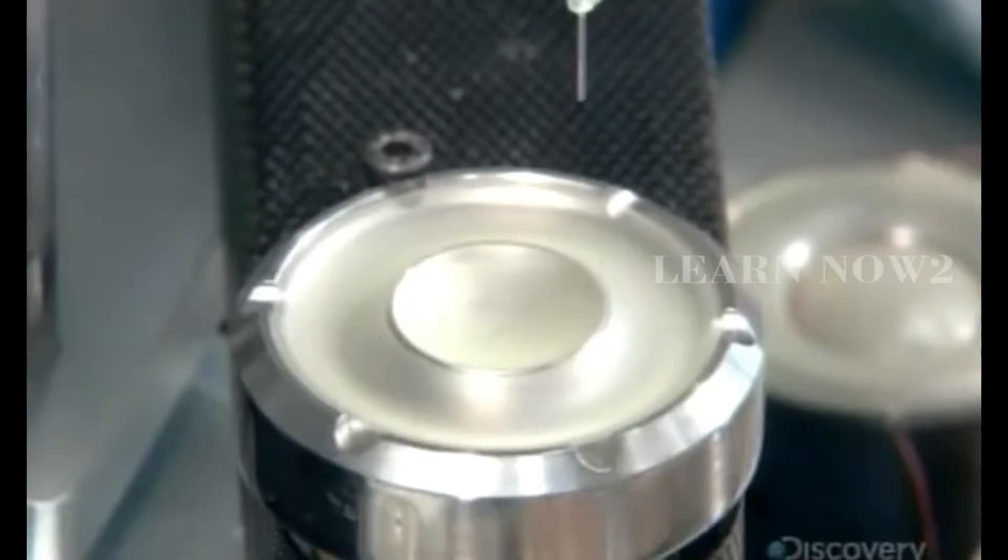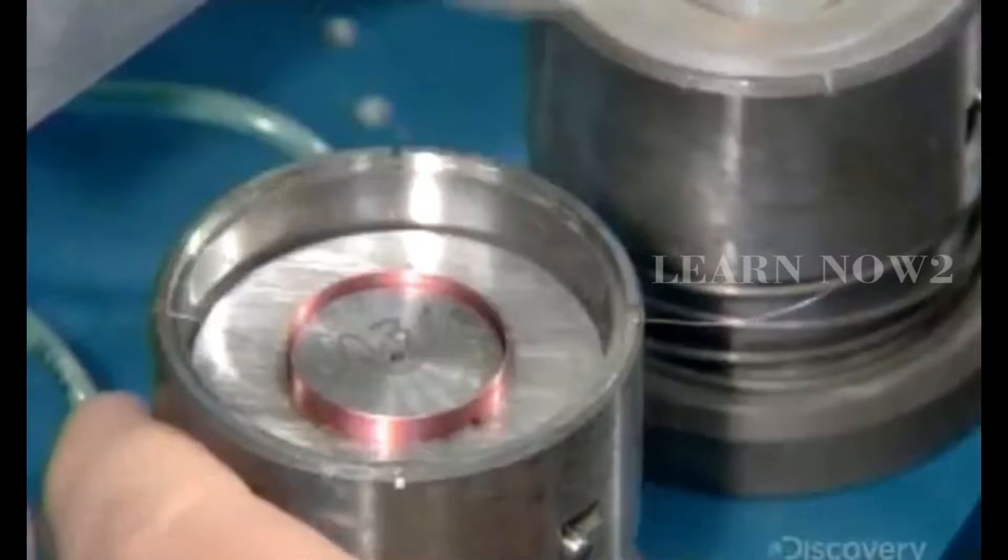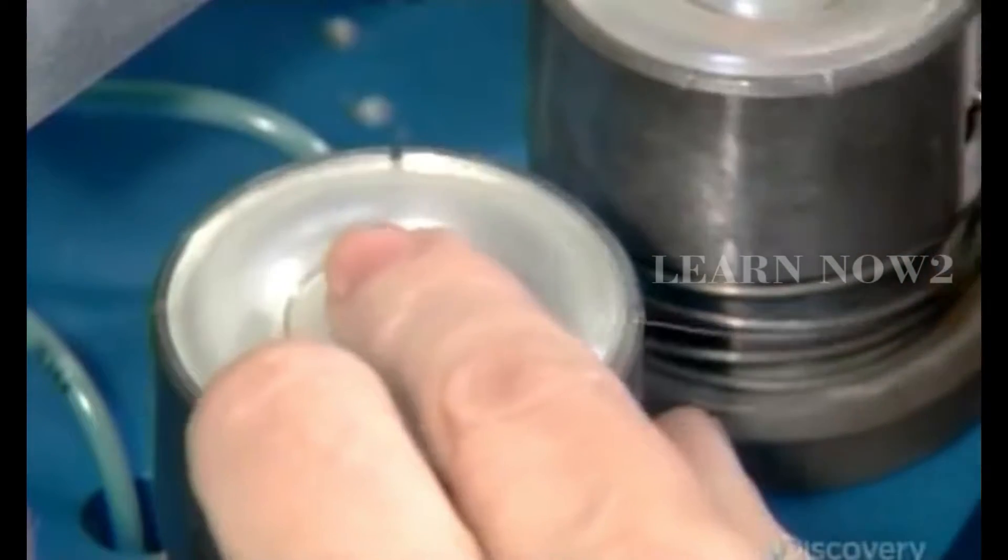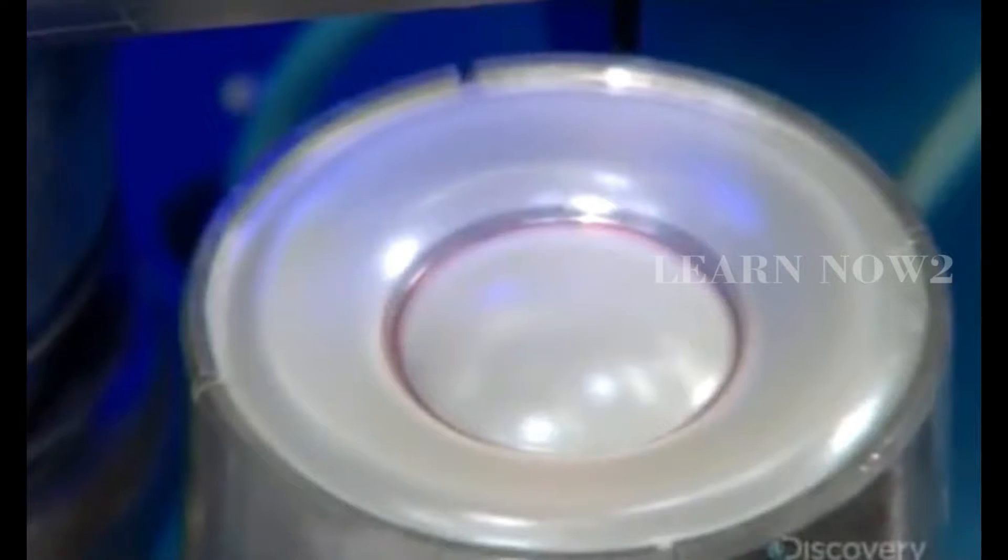She applies a bead of glue to the diaphragm, then positions the copper voice coil in an assembly device. She aligns the glued section of the diaphragm with the coil. Ultraviolet light activates the glue to seal the coil to the diaphragm.